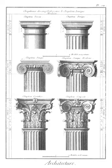Ashlar: masonry of large blocks cut with even faces and square edges. Atlas: a support sculpted in the form of a man, which may take the place of a column, a pier, or a pilaster.